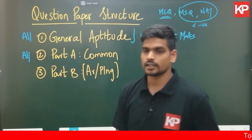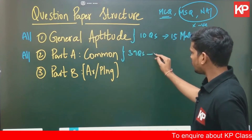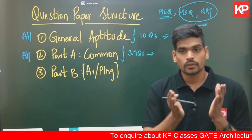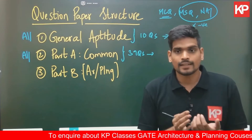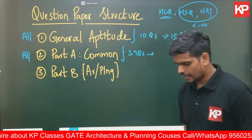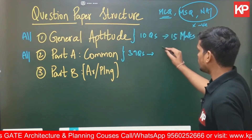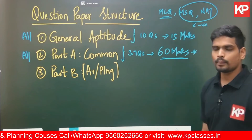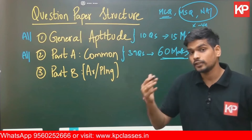Moving to the common part — Part A — which is also for everyone attempting the GATE Architecture and Planning paper. Part A has a total of 39 questions, which will be a combination of numerical questions, multiple choice questions, and multiple select questions. The total weightage of the common part is 60 marks — the maximum weightage in the entire GATE question paper. You need to place special emphasis on the subjects of the common part to score well and get a good rank.